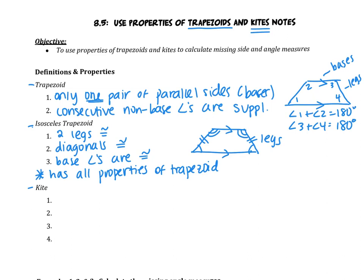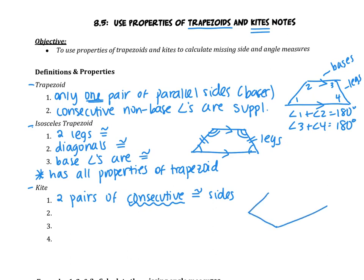The last figure we need to talk about is a kite. A kite is not a trapezoid and not a parallelogram — it's its own part of the tree, its own family. The biggest property that defines a kite is that it has two pairs of consecutive congruent sides. That's really important: it's not the opposite sides that are congruent, it's the consecutive sides. So one pair of consecutive sides is congruent, and another pair — not opposite, consecutive.